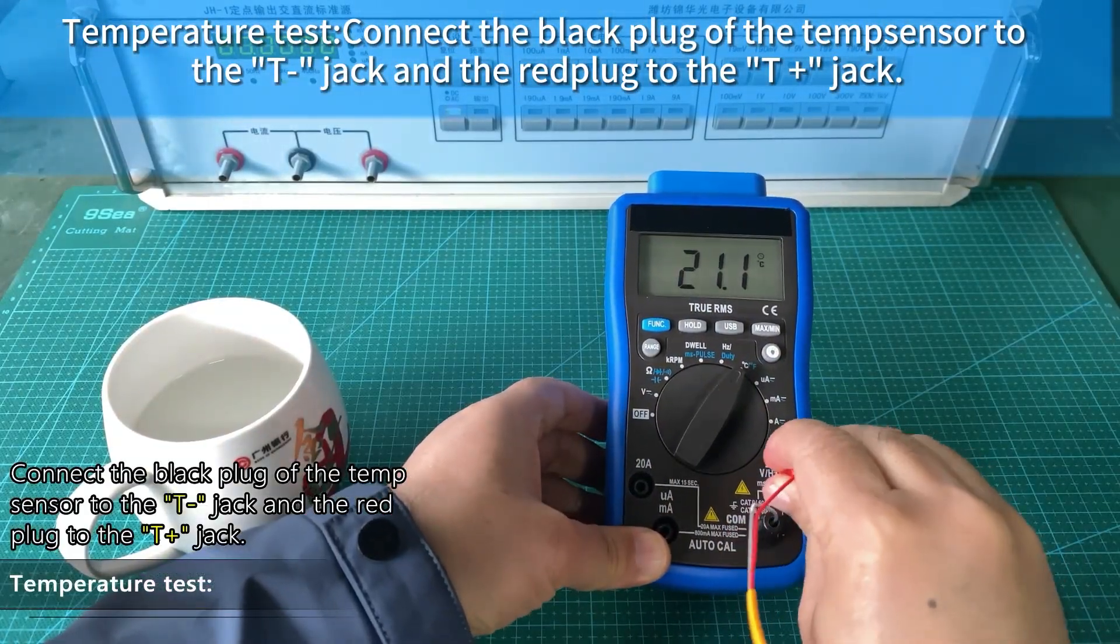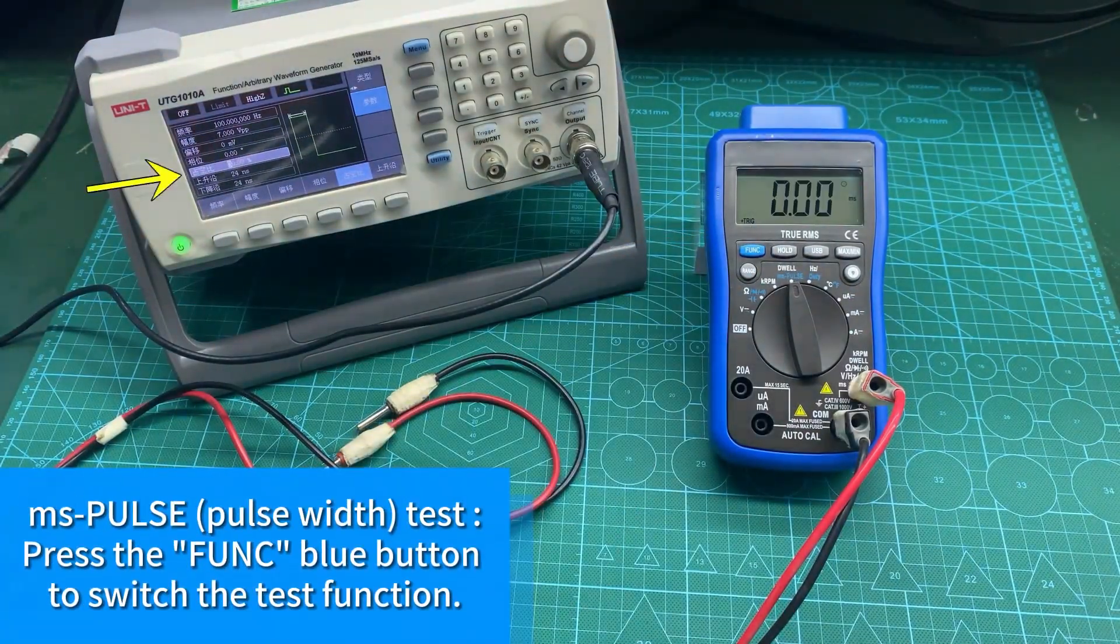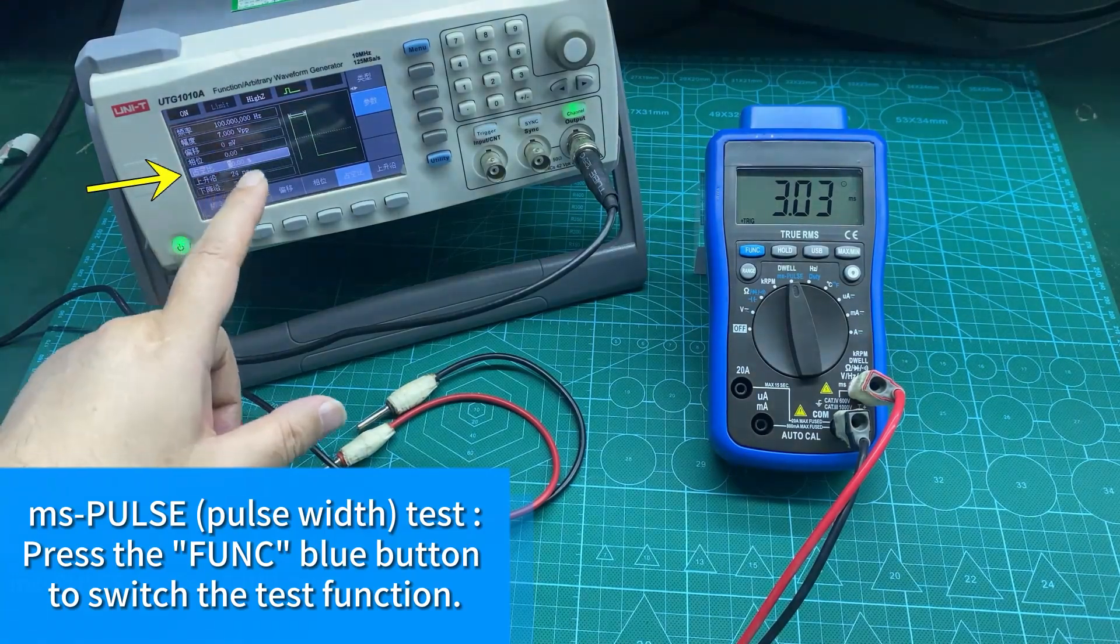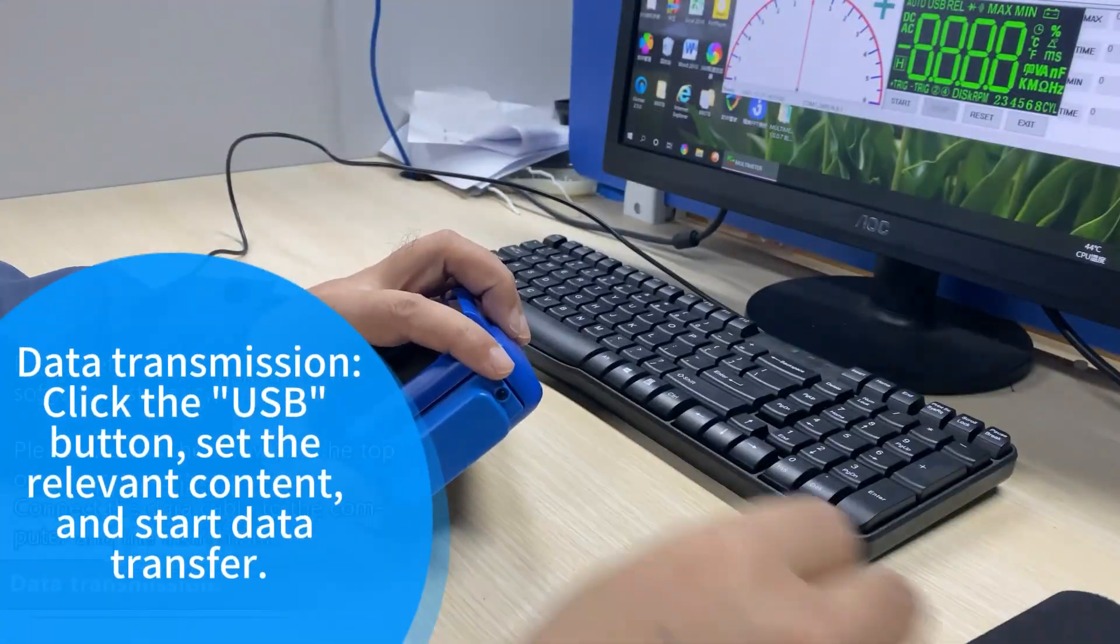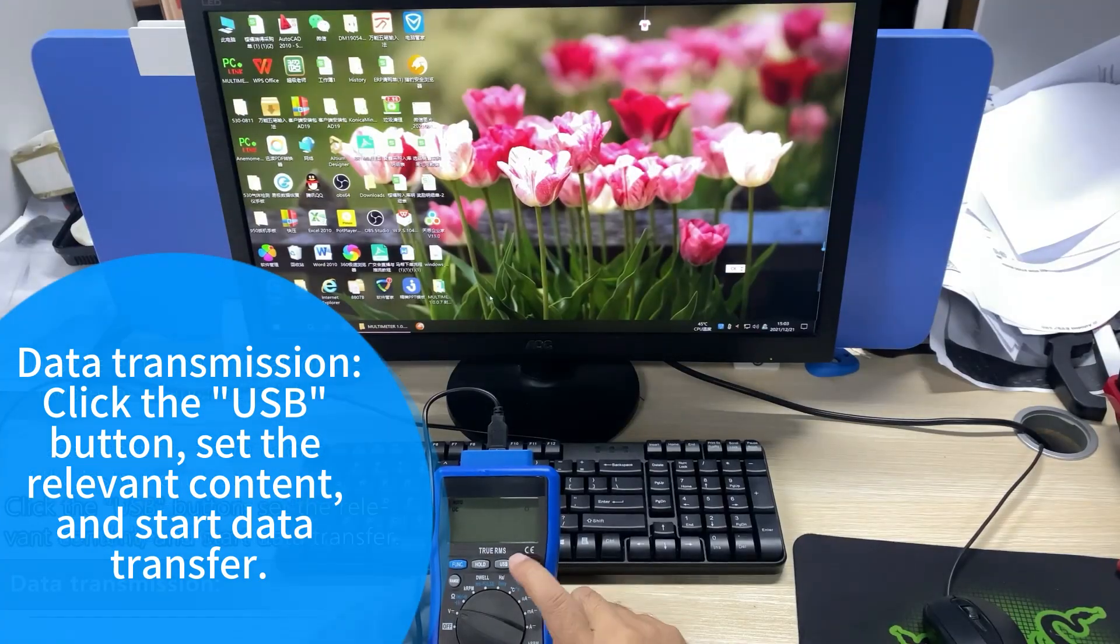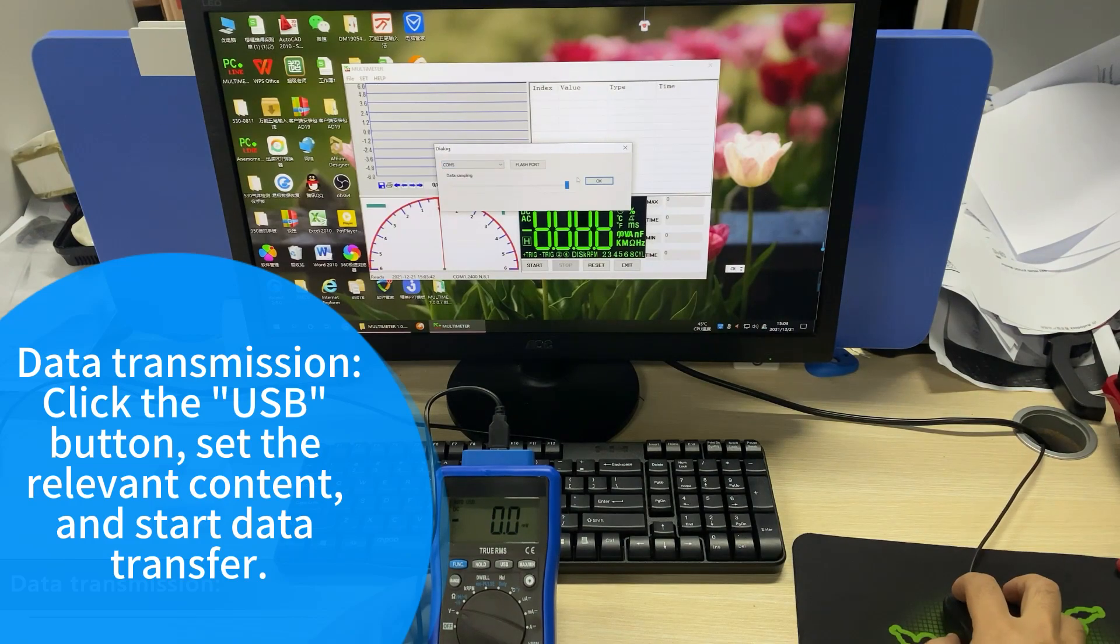the temperature sensor to the T-jack and the red plug to the T-jack. MS-PULSE (pulse width) test: press the FUNC blue button to switch the test function. Data transmission: click the USB button, set the relevant content, and start data transfer.